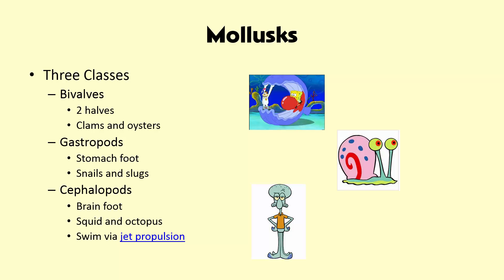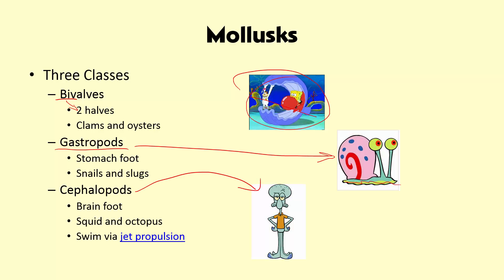There are three main classes of molluscs. First are bivalves — clams and oysters, with two halves. Then we have gastropods — snails and slugs. They have a foot for locomotion and a stomach. And then we have cephalopods — squid and octopi. They have big brains and also have a foot. Squid and octopus are in the class cephalopoda, and they swim via jet propulsion — pushing seawater instead of jet fuel.